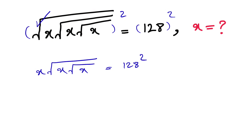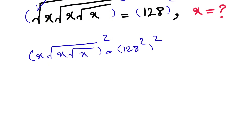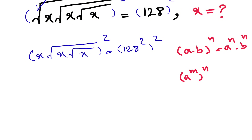Again, we have more square roots, so we're going to do the same thing — take the power of 2 on each side. We know that when we have a times b to the power of n, this equals a to the n times b to the n. Also, when we have a to the power of m to the power of n, this equals a to the power of m times n.